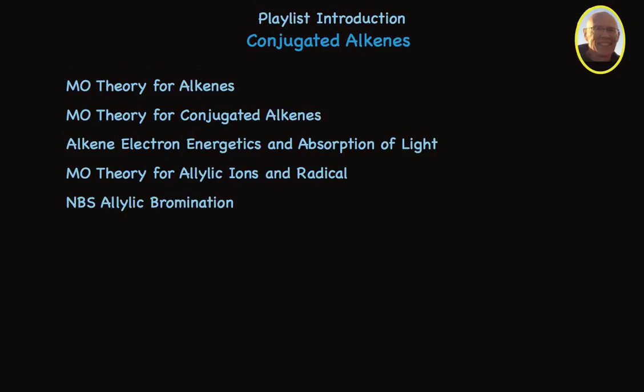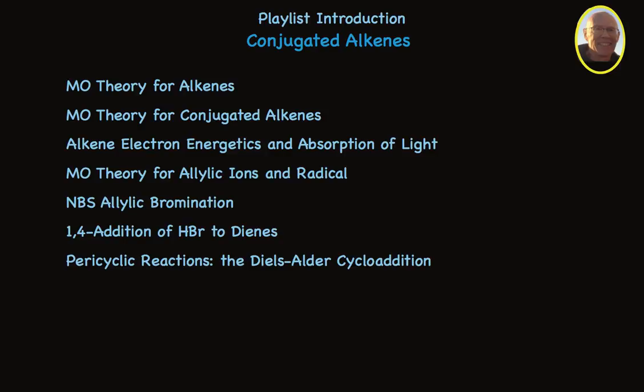We'll talk about two reactions that are widely discussed in terms of the allylic stabilization of radicals and cations. And finally, we'll take a look at pericyclic reactions — in particular, the Diels-Alder cycloaddition that's used to make six-membered rings.